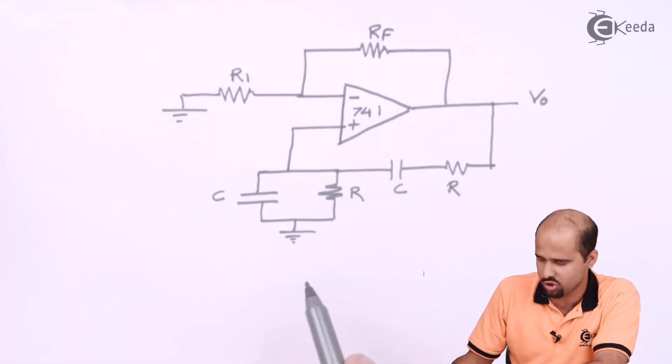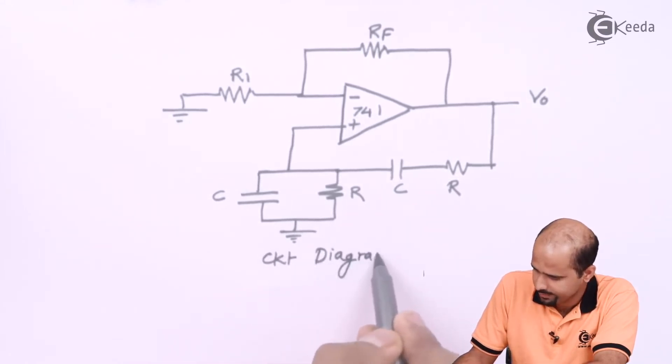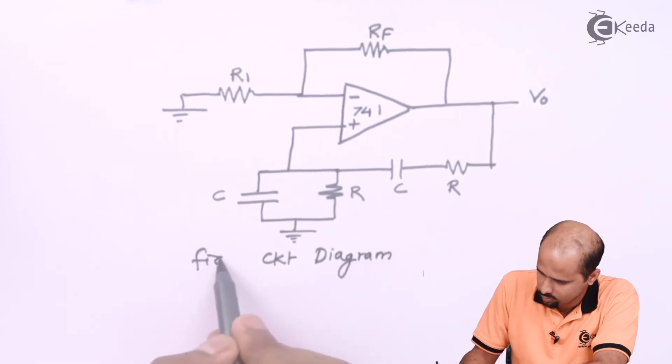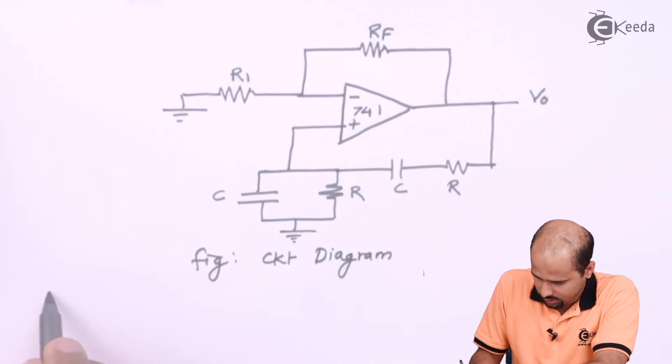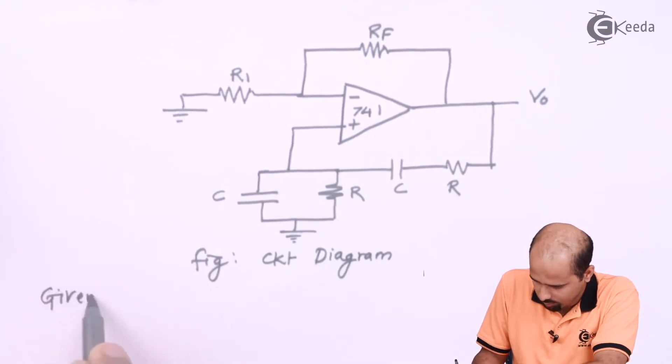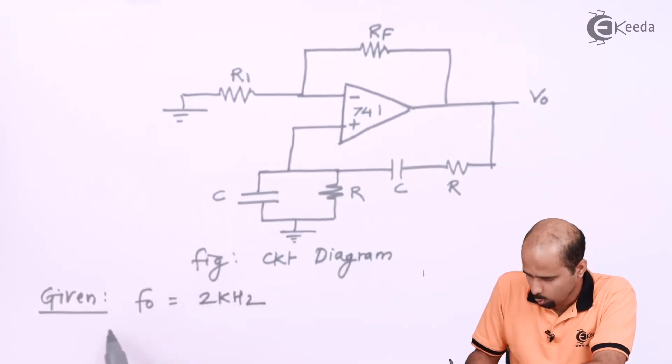This is Wien bridge oscillator circuit diagram. So this is circuit diagram. Now our job is to set - given is F0 = 2 kHz.